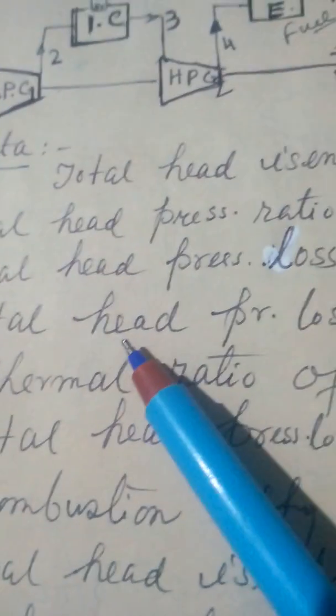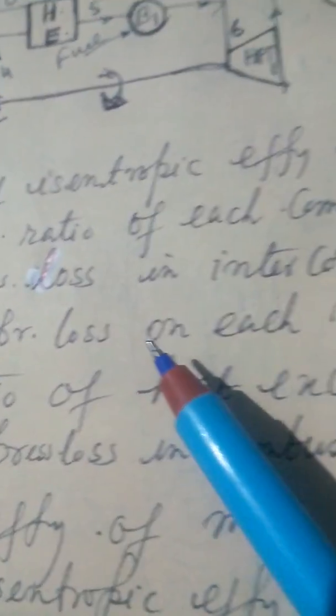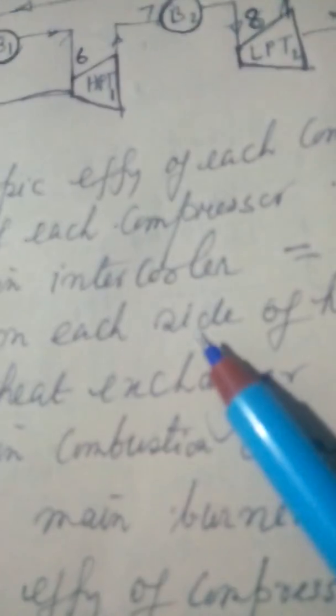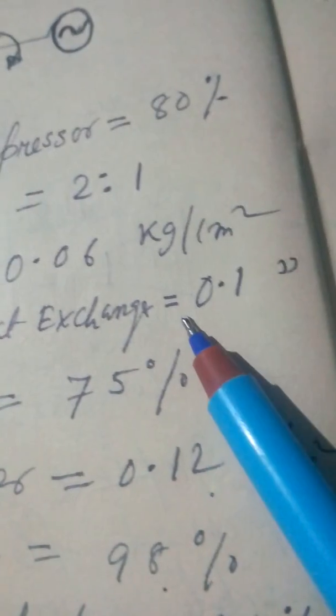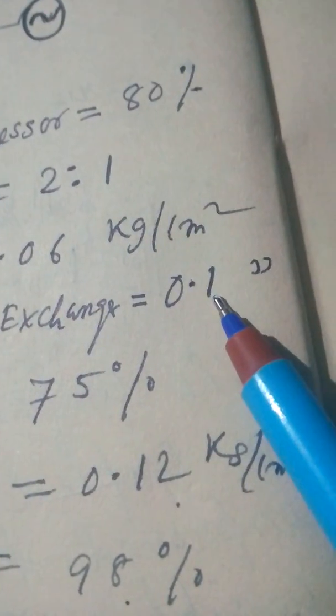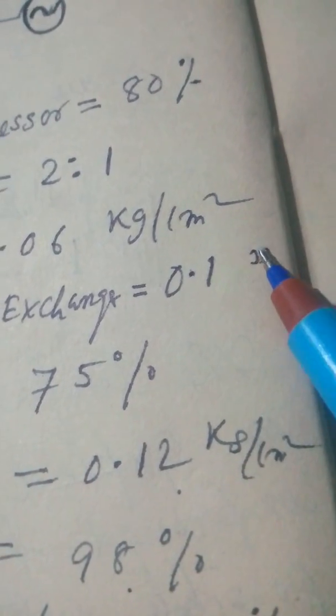Total head pressure loss on each side of heat exchanger is equal to 0.01 kg per centimeter square.